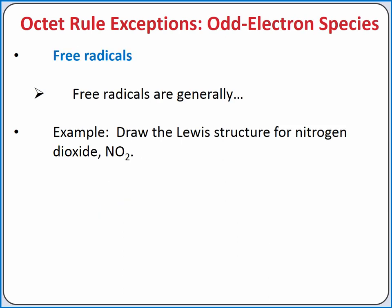Other Lewis structures may have an odd number of valence electrons. When this is the case, it's not possible for every atom to have exactly 8 electrons, and one electron will be unpaired. The unpaired electron makes the particle a free radical. Free radicals are generally highly reactive because of their unpaired electron.